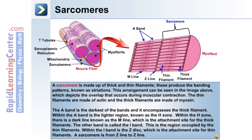The functional unit of contraction in skeletal muscle are the sarcomeres. This image depicts a blow-up of a sarcomere. The sarcomere spans from one Z-line to the next. Within the sarcomere are thick and thin filaments which overlap during contraction. This overlap makes up the A-band. A sarcomere is made up of thick and thin filaments that produce the banding patterns known as striations, as depicted in the image showing the overlap that occurs during muscular contraction.